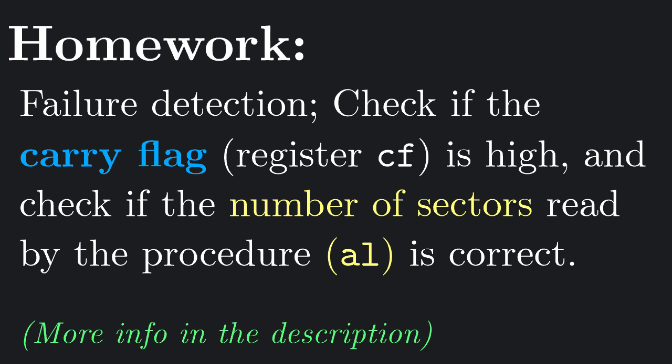Now for today's exercise. Reading the disk might fail for various reasons. When it does fail, two things can happen. The carry flag, a special register used to signal faults, and unsurprisingly whether a quotient has a carry or not, might be set to 1. Also, the AL register that should contain the number of sectors actually read, might contain the wrong number. I would like you to check for both of these things in your code, and print some kind of error message in both cases.